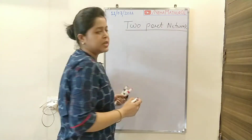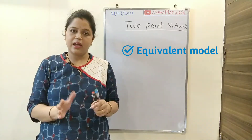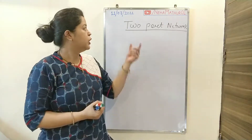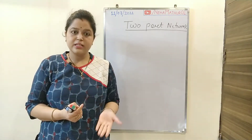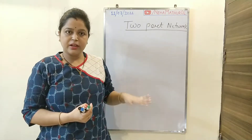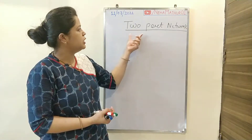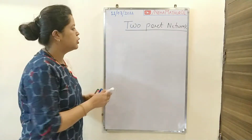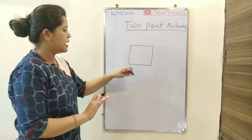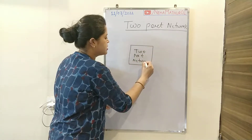Basically, a two-port network is an equivalent model. If we are going to analyze any electrical circuit, that particular electrical circuit can be easily converted into a two-port network so that analyzing that particular circuit becomes more easy. So a two-port network is just a method in which we convert a given electrical network into an equivalent model, represented as a block diagram.